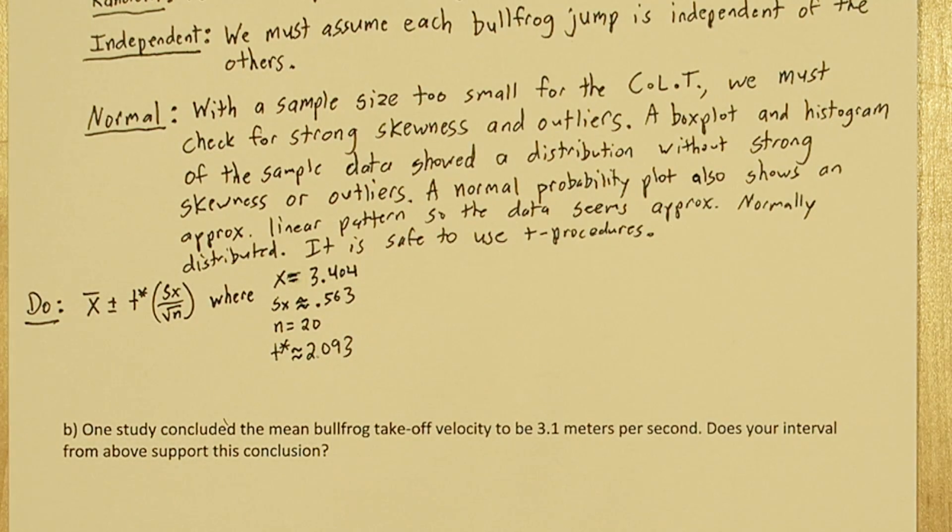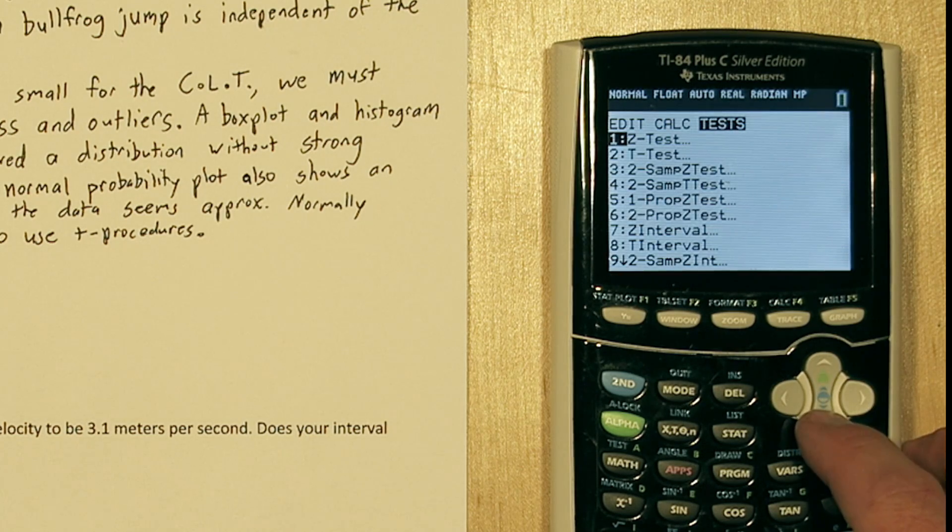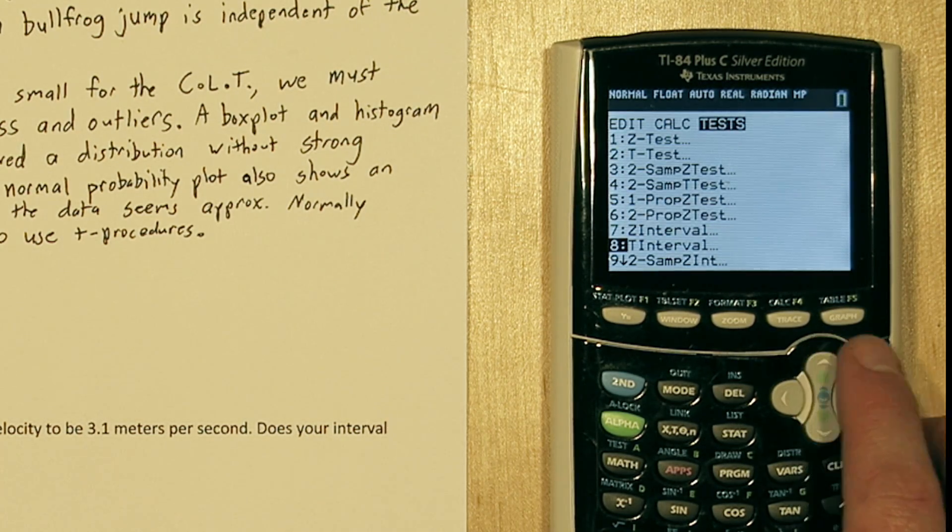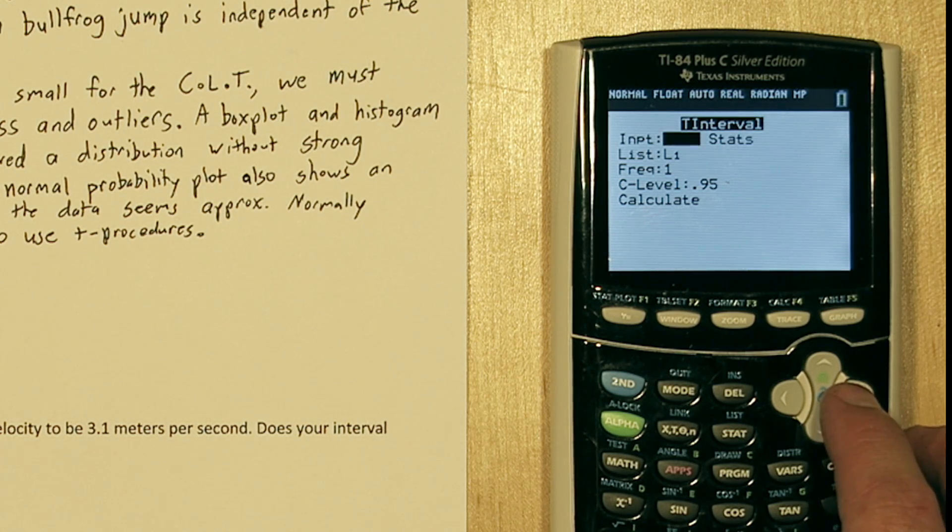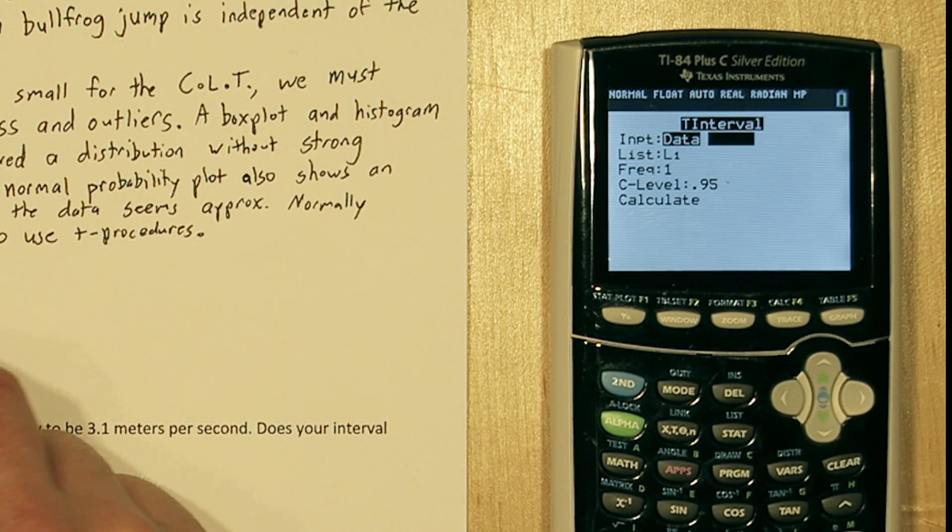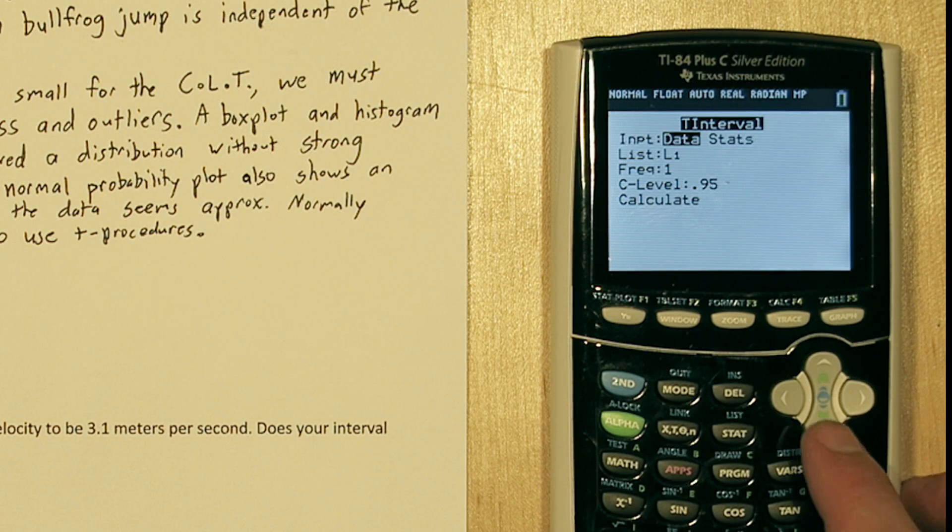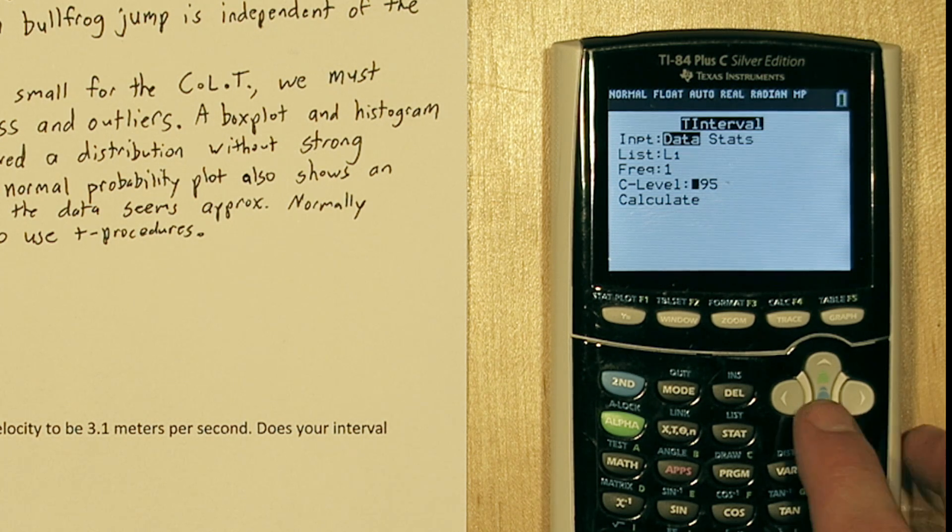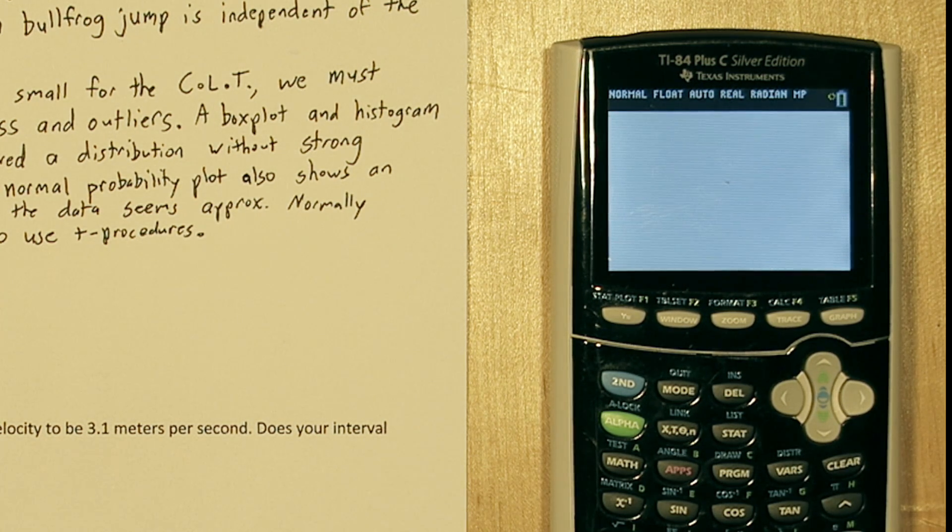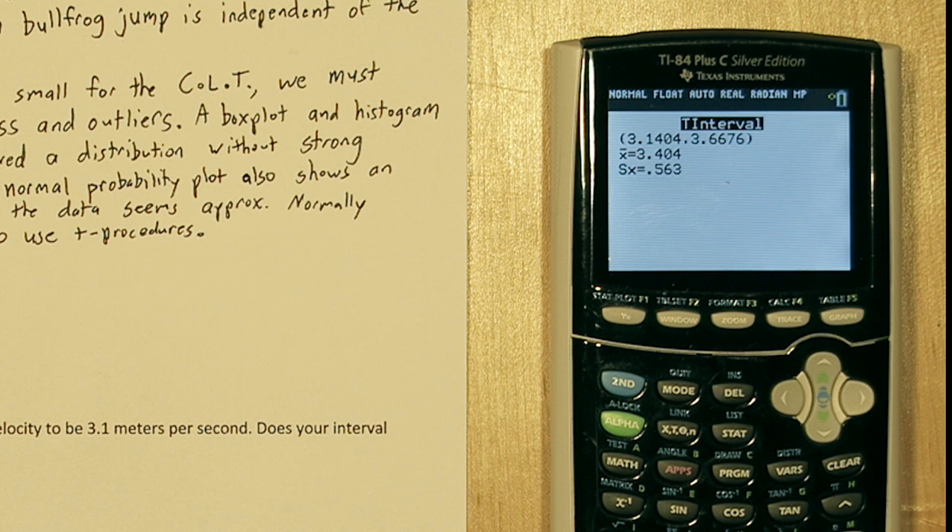But instead of calculating this whole interval manually, let's use the calculator to do it. If you press stat, and you go over to test, the eighth option is t interval. If we press enter there, you can choose if you want to put in summary statistics, which we have. But let's just use the raw data. So if we leave it on data, and say use list one, use it one time, and use a confidence level of 95%. When we press enter, we get our interval. Our interval is 3.1404 to 3.6676.